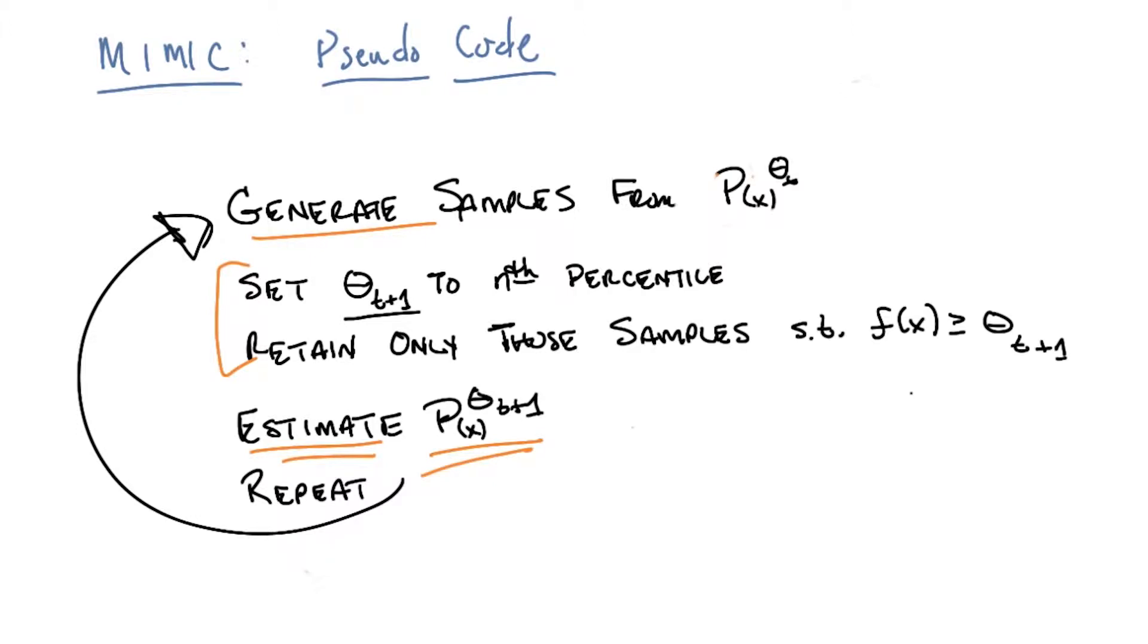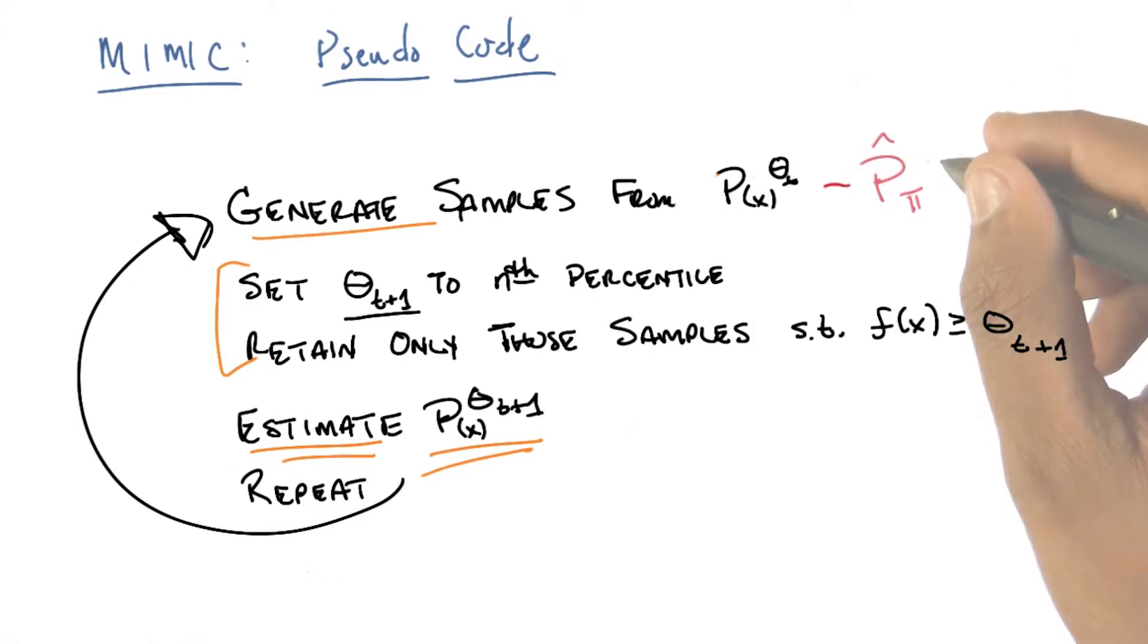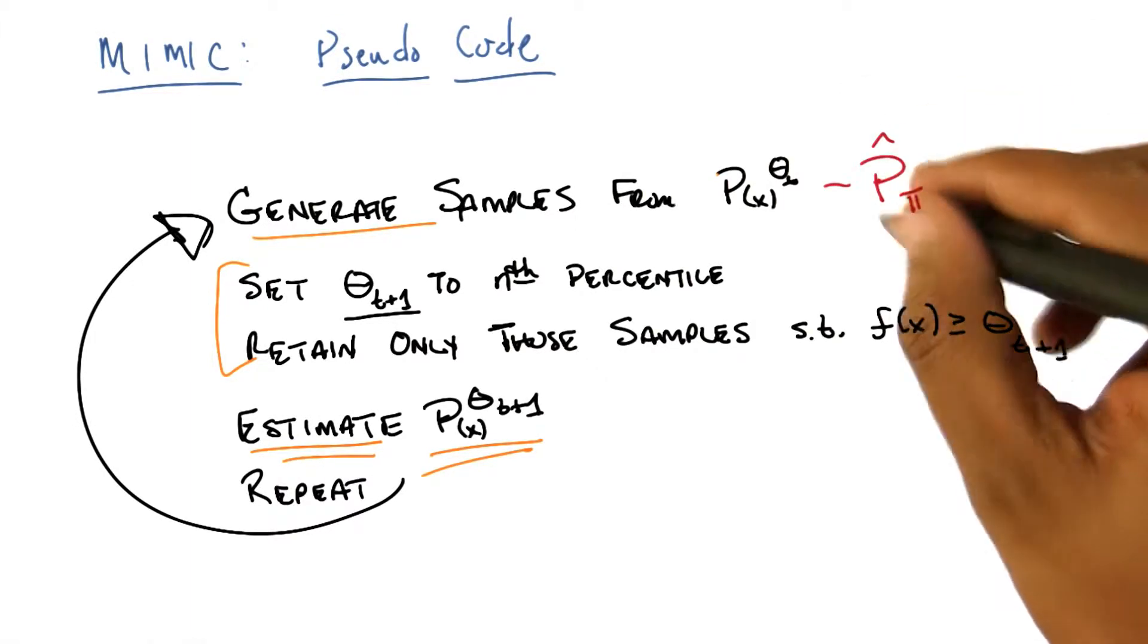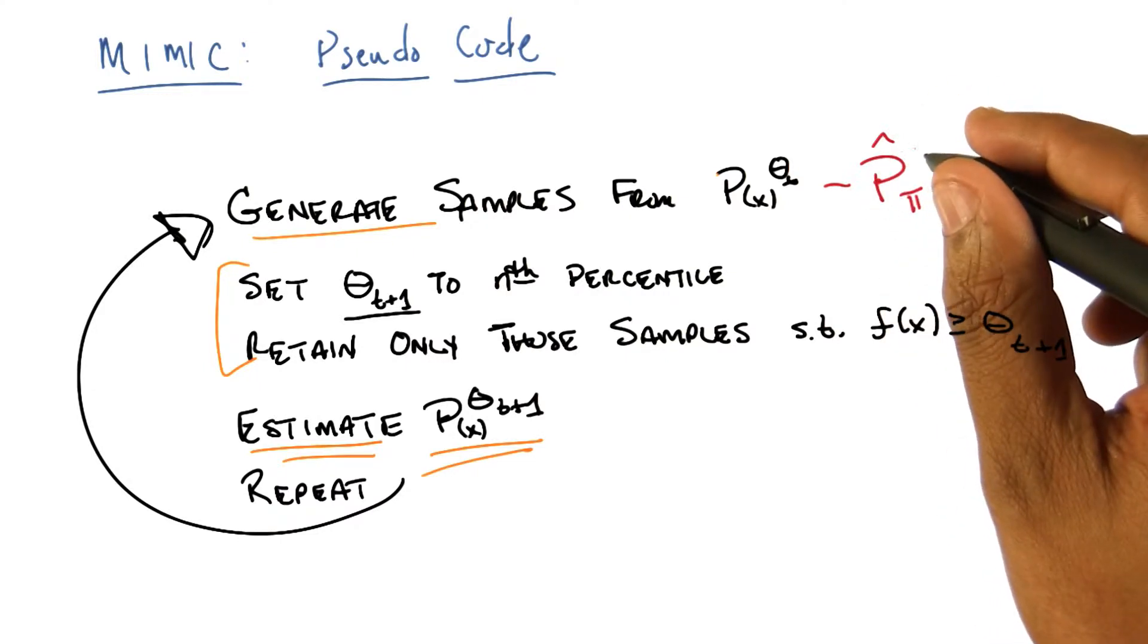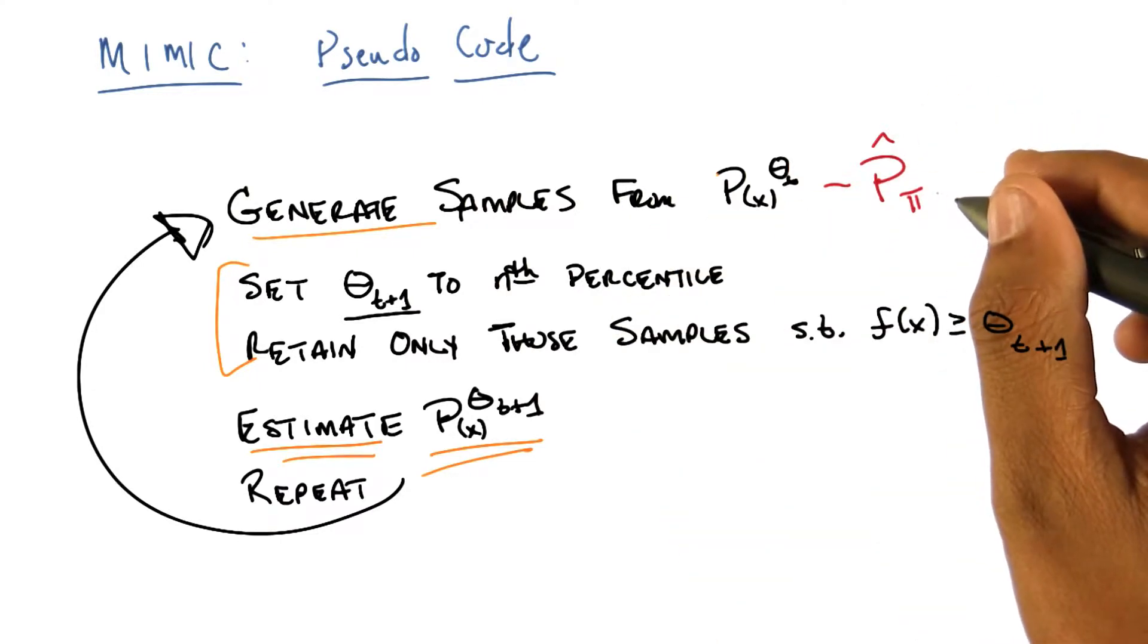So, as you recall, the goal is to generate samples from some p sup theta sub t of x. So in this case, we're just going to estimate that by finding the best dependency tree we can, that is the best pi function. So we're going to be starting with some dependency tree, and we're going to generate samples from that, and we know how to generate samples from that.